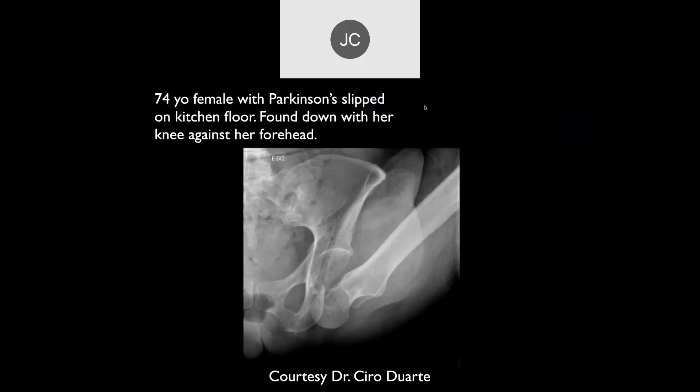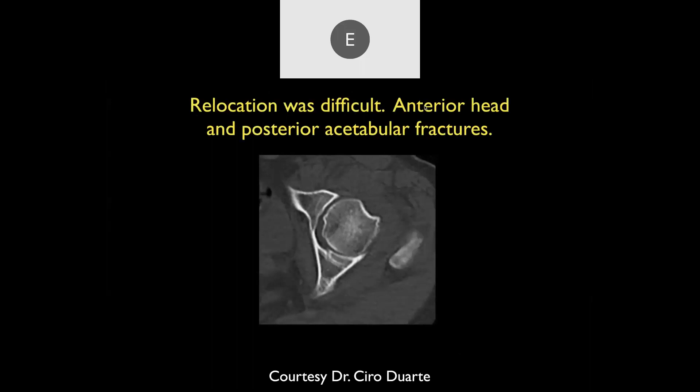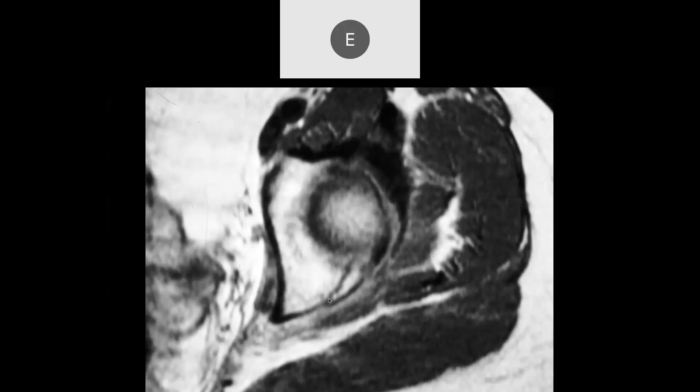A 74-year-old female with Parkinson's who slipped on the floor, found down with her knee against her forehead. Radiograph of the left hip shows dislocation of the hip joint. Relocation was difficult. There are anterior head and posterior acetabular fractures, with fracture of the posterior column of the acetabulum.